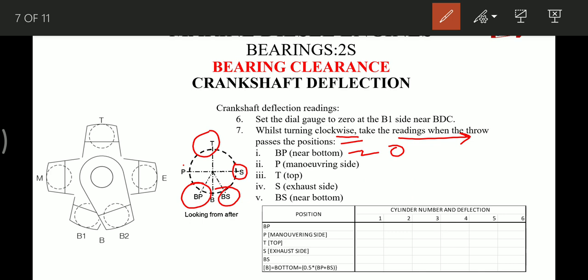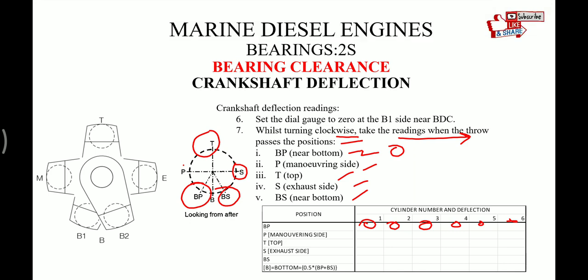So for all the points we take reading P, T, S and BS and we note it down in the table as you can see. So for BP all the units it will be zero. All the units it will be zero, and corresponding readings for P, T, S we can note it down in this table. Now after we have noted down the readings in the table, we need to do a little bit calculation.